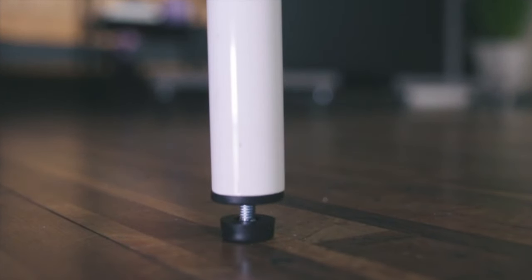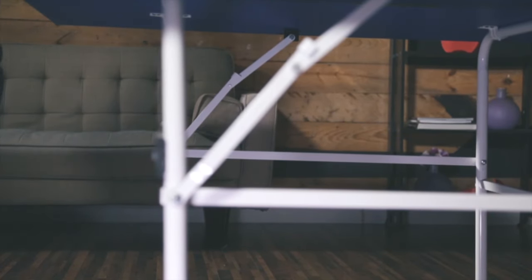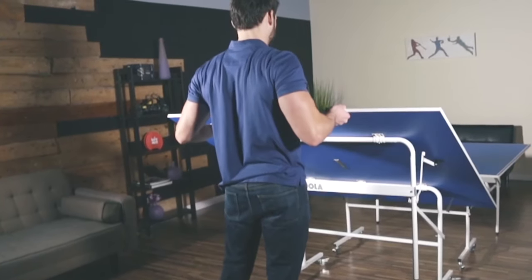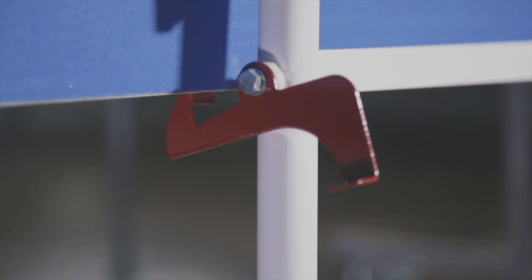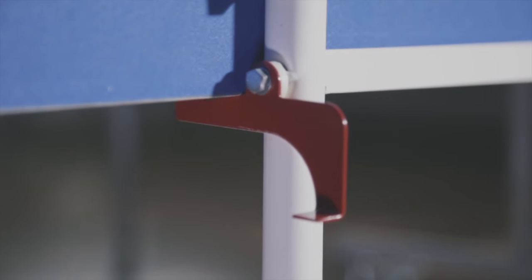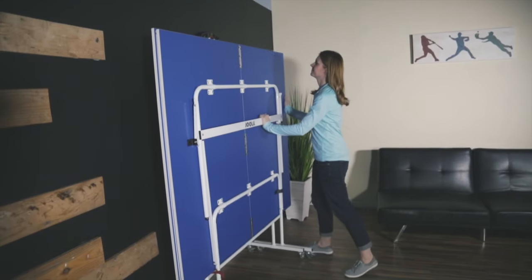This table has adjustable height levelers for a level playing surface. To store the table, simply fold the table halves, secure with hook-and-loop fastener, and ensure the gravity lock located on each half is locked. Nest the separate halves together for compact storage.